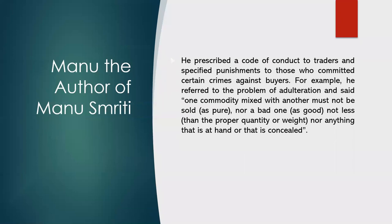The Manu Smriti, an ancient Hindu code, prescribed the code of conduct for traders. It prescribed punishments for offenses against buyers — for example, adulteration, defined as mixing one commodity with another and being sold as pure. There was also guidance for selling something with improper quantity or weight, or hiding details of the thing being sold.